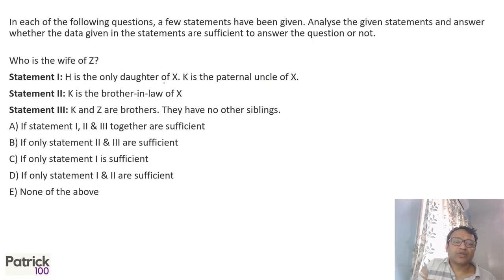Next, who is the wife of Z? Check where Z is given. Z is given in the last statement. K and Z are brothers, and they have no other siblings. Now look at anything where K is given.